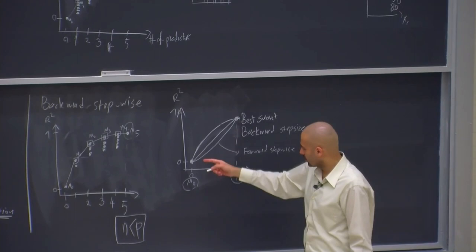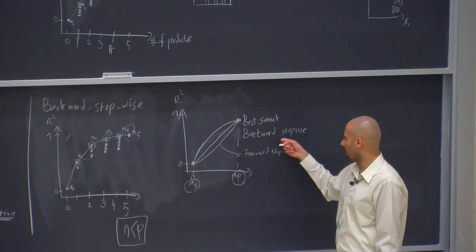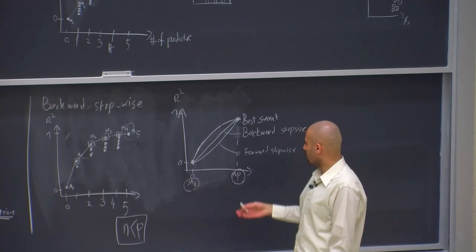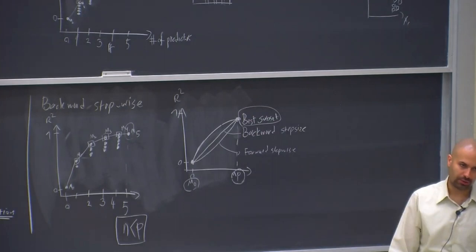It's just the journey that is different and that's pretty much what matters. And forward stepwise is not necessarily below backward stepwise. In this example, I just drew it like this, but this is not necessarily the case. What we know is that both of these methods are below best subsets in terms of predictive accuracy or in terms of R squared.